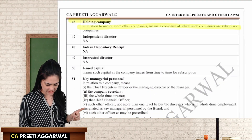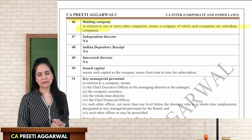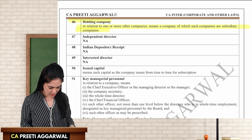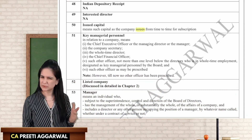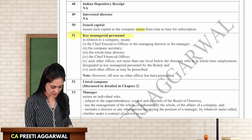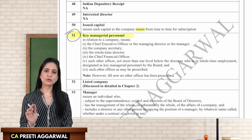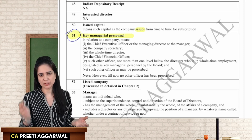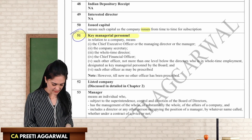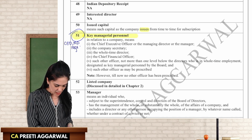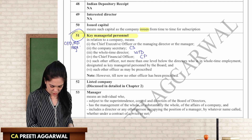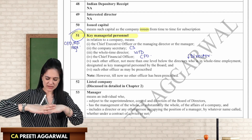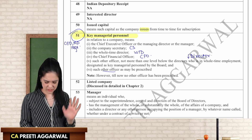Holding company — I am your holding if you are my subsidiary. This is a very important definition for exam, discussed in detail in the next chapter. Key managerial personnel — Clause 51, important along with the clause number. KMP includes: CEO, managing director, manager, company secretary, whole-time director, chief financial officer, and any officer not below one level below the board of directors. Any other officer as may be prescribed — as of now, no other officer has been prescribed.